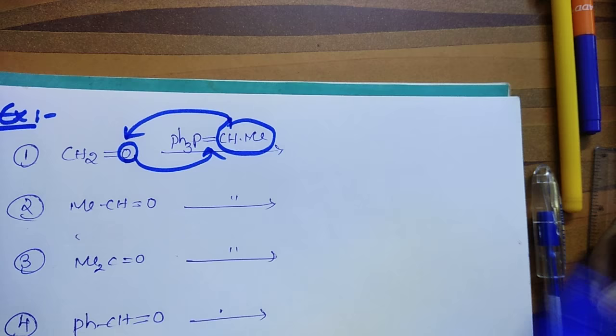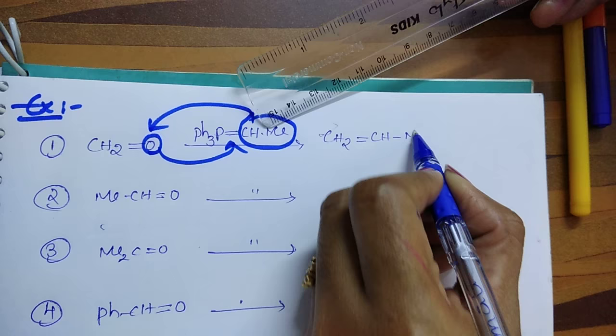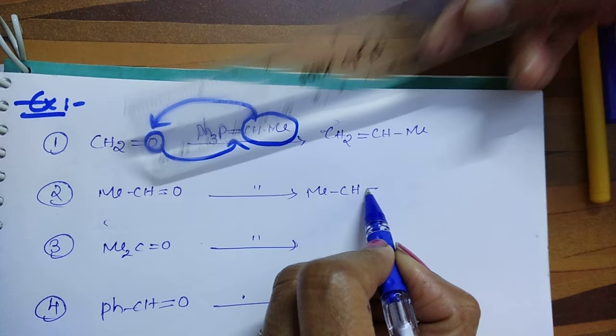Write here, then CH2 double bond, what do you get here? CHMe. Here, Me-CH double bond, what you have...